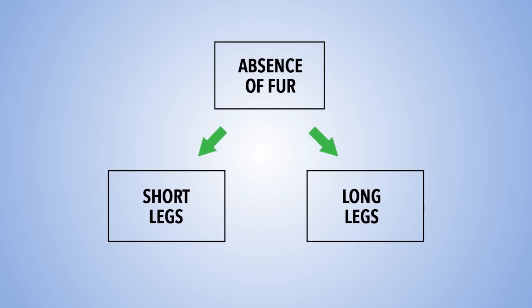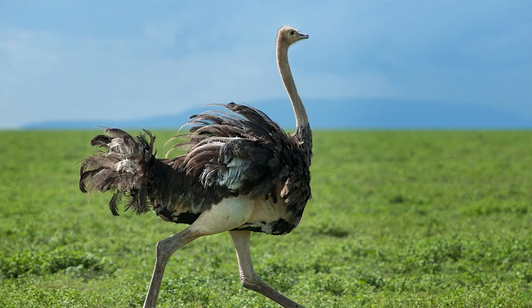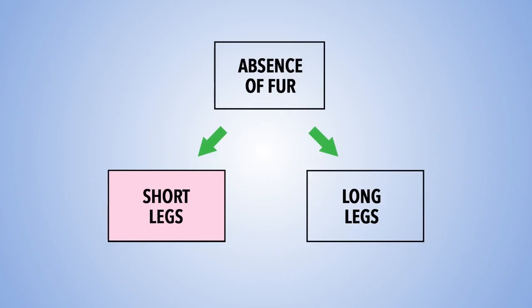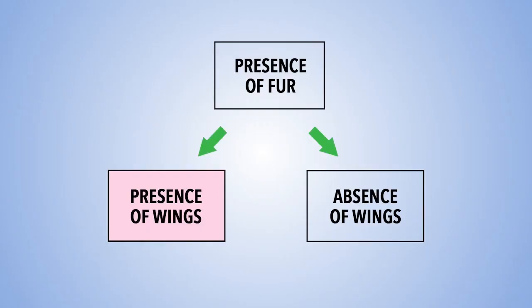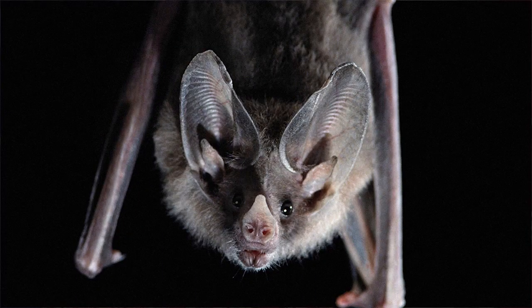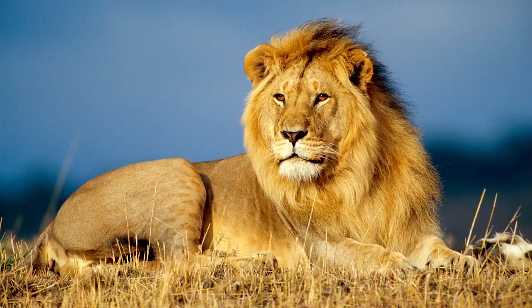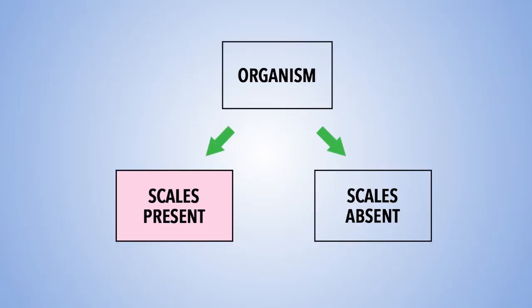We are now going to use long legs and short legs to differentiate the organisms. For long legs we have the ostrich, whilst for short legs we have the domestic fowl. Now for presence of fur, the differentiating factor is presence of wings versus absence of wings. For presence of wings we have the bat, whilst for absence of wings we have the lion.